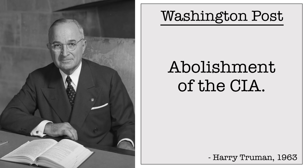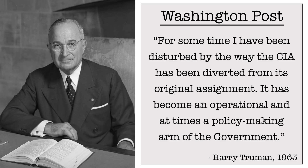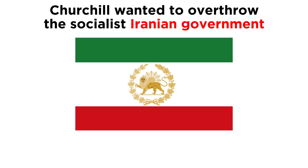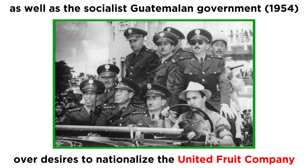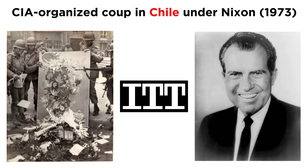In a Washington Post editorial in 1963, Truman called for the abolishment of the CIA, writing, "For some time I have been disturbed by the way the CIA has been diverted from its original assignment. It has become an operational and at times a policymaking arm of the government." Although Truman rejected Churchill's pleas to overthrow the socialist Iranian government threatening to nationalize the British Petroleum Oil Company, the later Eisenhower administration would have no such qualms, and the CIA was used to overthrow the Mossadegh government in 1953, as well as the socialist Guatemalan government in 1954 that wanted to nationalize the United Fruit Company, thus preventing the redistribution of wealth from corporations to citizens. The CIA would later organize a coup in Chile under Richard Nixon on behalf of ITT, a large Nixon contributor.